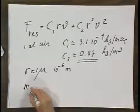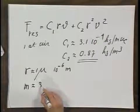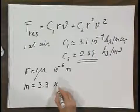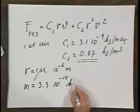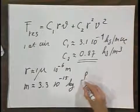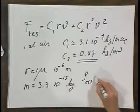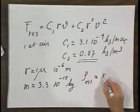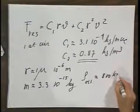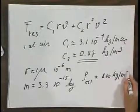And the mass of the oil drop is then approximately 3.3 × 10⁻¹⁵ kilograms. The density of oil is approximately 800 kilograms per cubic meter.